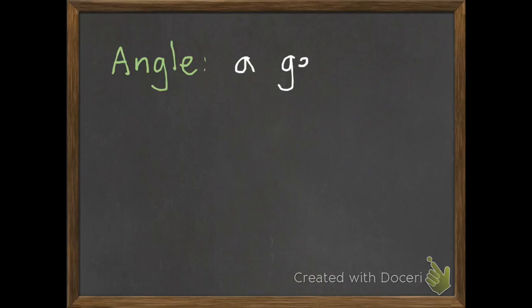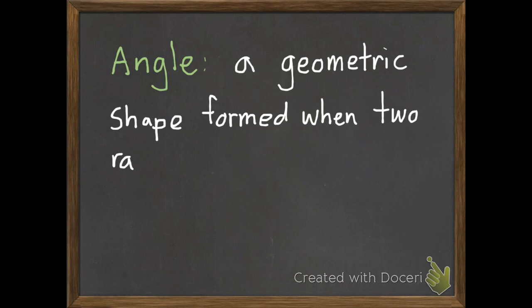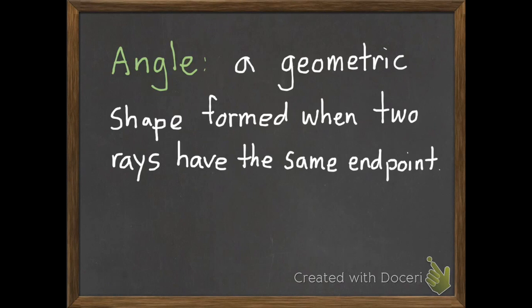An angle is a geometric shape formed when two rays have the same endpoint. While you're writing that down I'm going to draw a little picture. So they have an endpoint, so draw that point right there, and then two rays that have that same endpoint. So there's one ray, two rays, and this makes an angle.